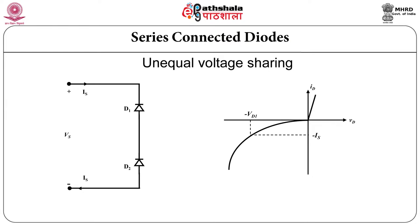Let us consider the IV characteristics of the first diode. You can see the reverse current flowing through diode D1 — current I_S is flowing and the reverse voltage appearing across the diode is V_D1. If you see the second characteristics of D2 then you will see that at the same current the reverse voltage across D2 is V_D2. This voltage much differs from the first diode voltage drop, which will create a problem — it is an unbalanced condition.